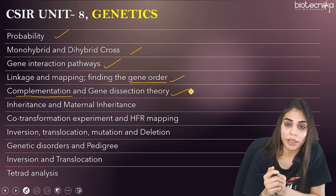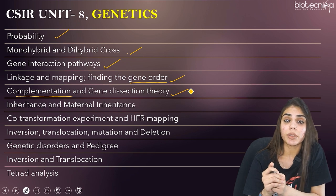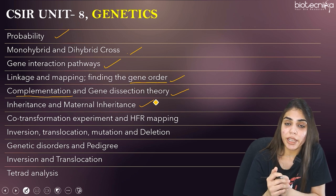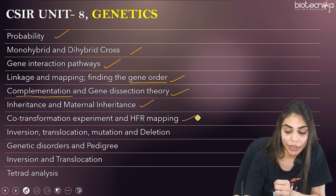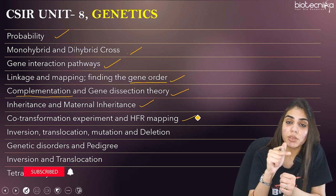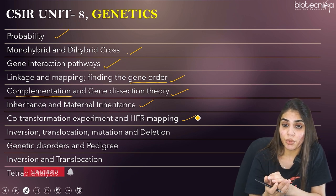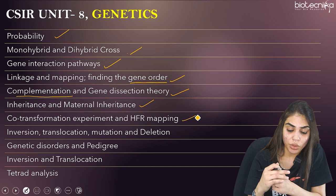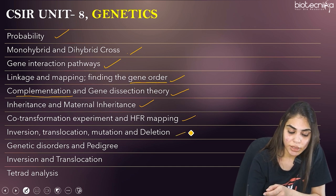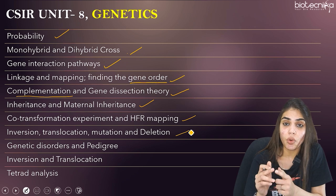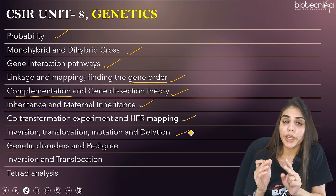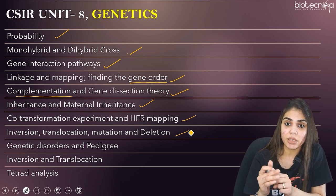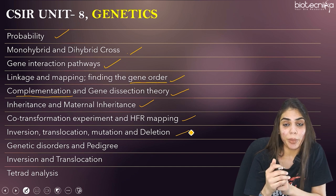The next is inheritance and maternal inheritance — know the inheritance patterns and specifically maternal inheritance. Co-transformation experiments along with Hfr mapping are also very important. Also learn inversion and translocation — pericentric and paracentric inversion, mutation, and deletion. Genetic disorders and pedigree analysis are essential — learn how to solve pedigrees, whether autosomal recessive or X-linked recessive.